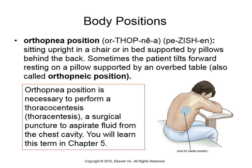Finally, we have body positions before moving to quadrants and regions. Body positions are used to communicate patient positioning for procedures, surgeries, and recovery. The first is the orthopnea position — sitting upright, supported by pillows, with a straight back or tilted slightly forward. This specific position is needed for procedures like a thoracocentesis, where fluid in the lungs needs to be suctioned out.